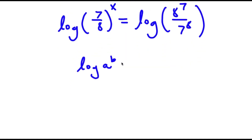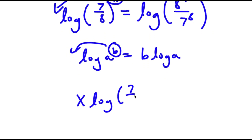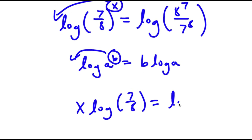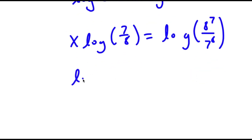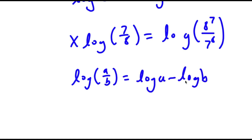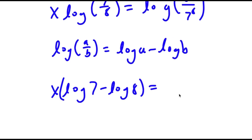Using the log power rule, log of (7/8) to the power of x becomes x times log(7/8), which equals log of (8 to the power of 7 over 7 to the power of 8). Applying the quotient rule, log(7/8) equals log 7 minus log 8. And the right side expands to 7 times log 8 minus 8 times log 7, moving the exponents to the front.